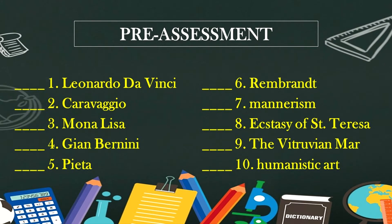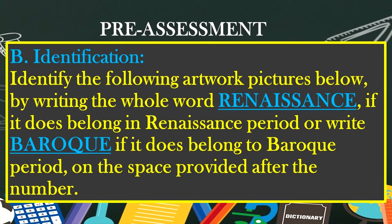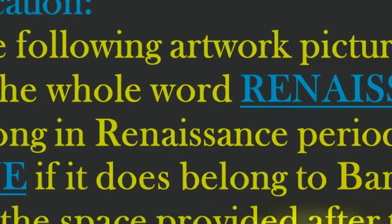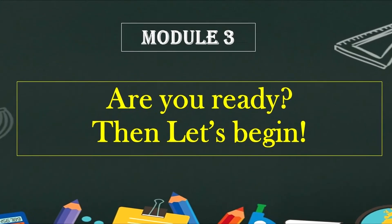Test B — Identification: Identify the following artwork pictures below by writing the whole word 'Renaissance' if it belongs to the Renaissance Period, or write 'Baroque' if it belongs to the Baroque Period, on the space provided after the number. Are you ready? Then let's begin.